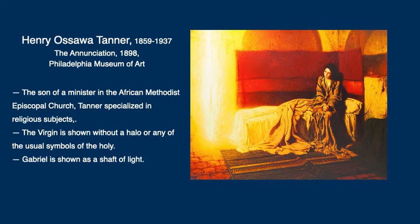There are many examples of the Annunciation. I decided to show Henry Osawa Tanner's The Annunciation. He was the son of a minister in the African Methodist Episcopal Church and specialized in religious subjects. Here the Virgin is shown without a halo or any of the usual symbols of the Holy, and Gabriel is shown as a shaft of light. You can see in her face perhaps timidity, reflection, thoughtfulness, wonder.